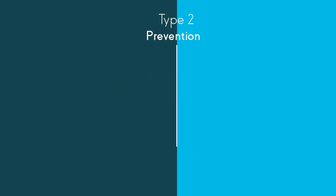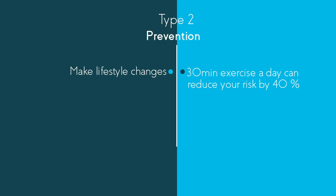Due to the risk factors, you may not be surprised to hear that lifestyle changes can help prevent the development of type 2 diabetes by achieving a healthy body weight. 30 minutes of exercise a day can reduce your risk of developing type 2 diabetes by 40%.